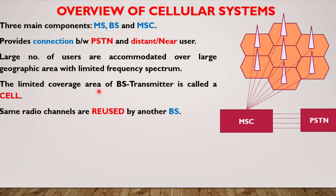The same radio channels are reused by another base station. For example, if you are using some frequency spectrum, say X MHz, in cell A, the same X MHz frequency can also be used in cell B by providing sufficient isolation. That is called the frequency reuse concept, and that is the beauty of these cellular systems.